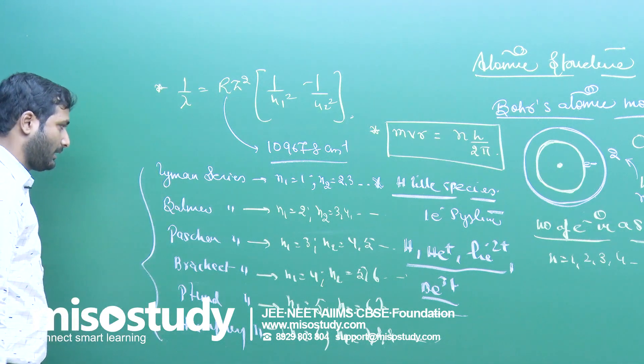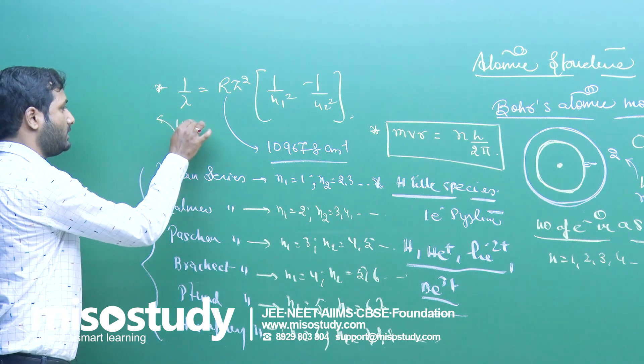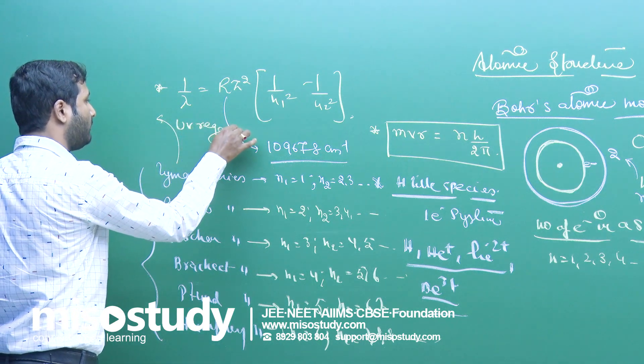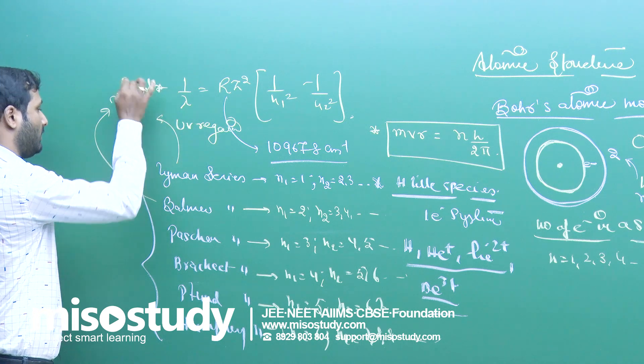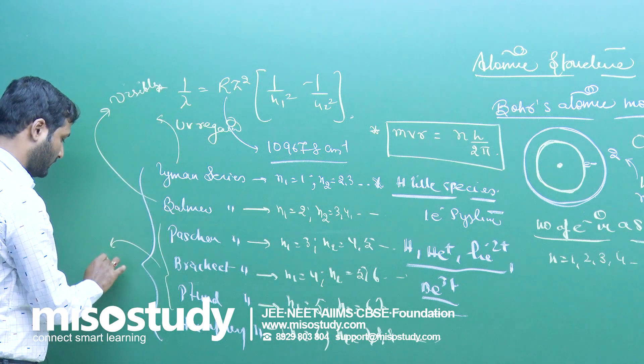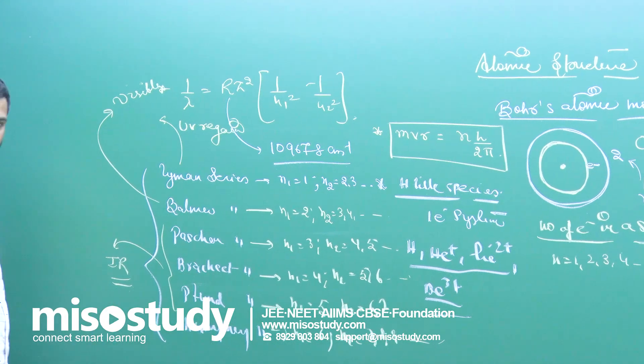Lyman comes in the UV region. Only one series is visible, that is Balmer series. It comes in visible region, and Paschen-Brackett and Pfund series comes in infrared region.